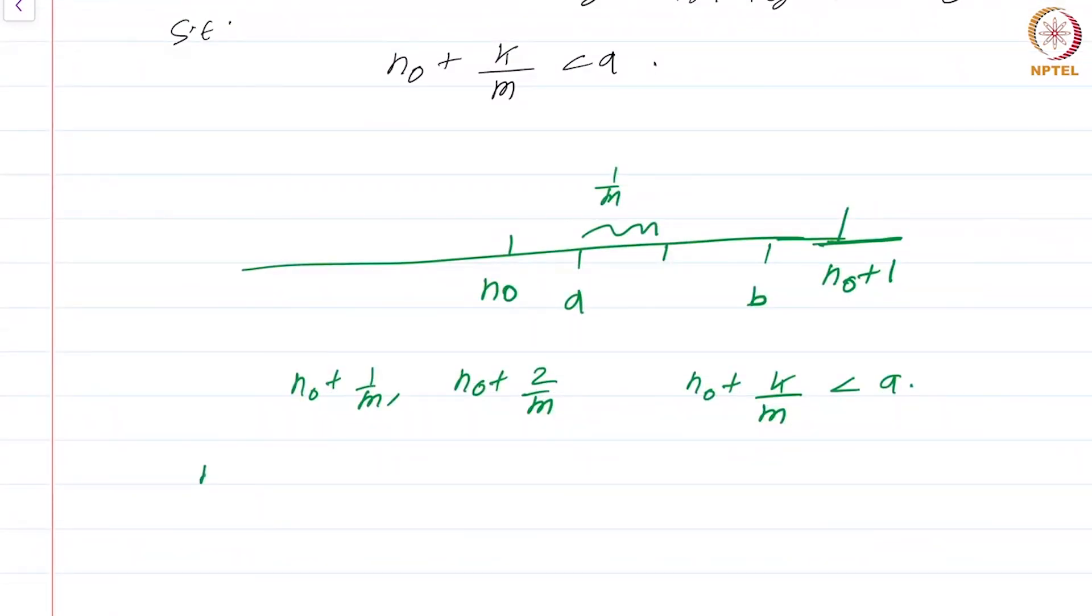Now, n₀ + k/m + 1/m will necessarily have to belong to (a,b). Why? Because n₀ + k/m is less than a, and 1/m is less than (b-a)/2. So adding (b-a)/2 to something less than a cannot exceed b, simply because the length of the interval (a,b) is b-a and 1/m is less than (b-a)/2.